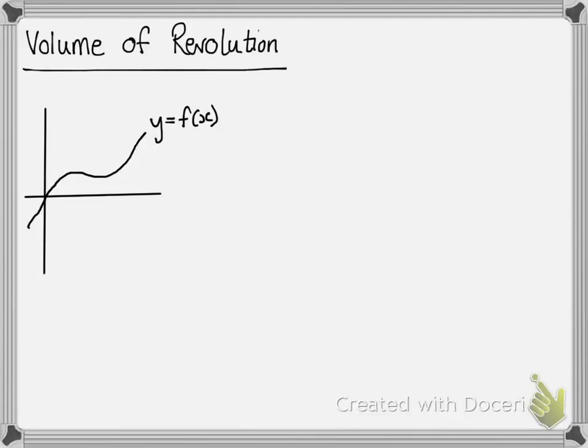Today we're looking at volumes of revolution. We've got this curve here with a shaded area underneath, and we're asked to find the volume of the shape made by rotating it around the x-axis. In this particular case we get this bell shape. We take that shaded part and rotate it a full circle around the x-axis to create a 3D solid, and we're asked to work out the volume of that solid.